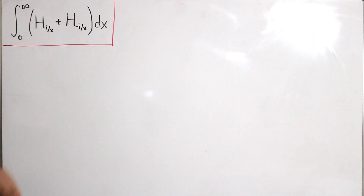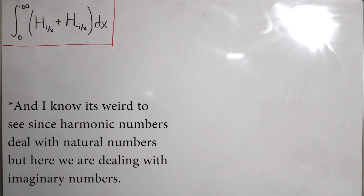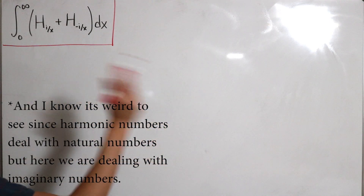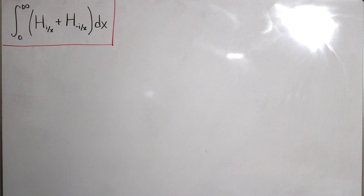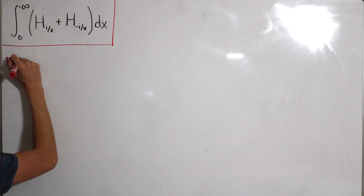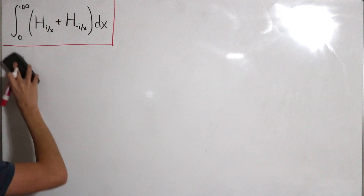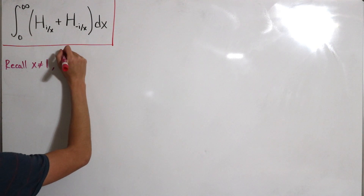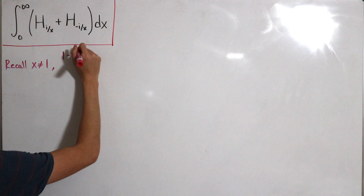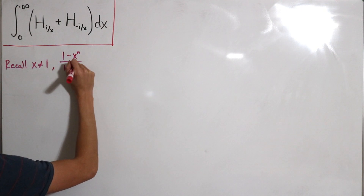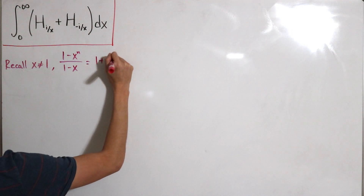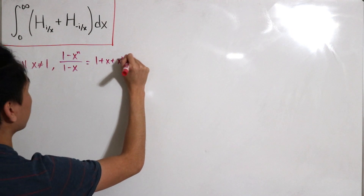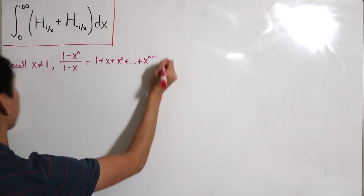As mentioned, H sub n denotes the nth harmonic number. Since there is an integral representation of the harmonic number, we'll use that to turn the problem into a double integral. To recall: for x not equal to one, the rational function (1 − x^n)/(1 − x) equals 1 + x + x² + ... + x^(n−1).